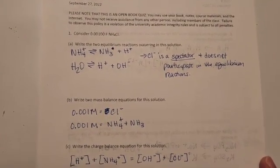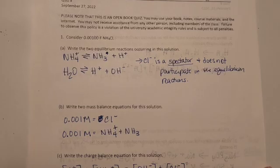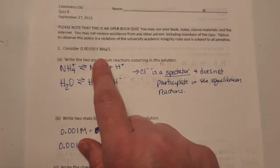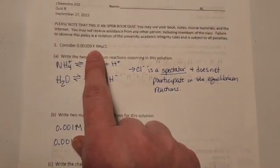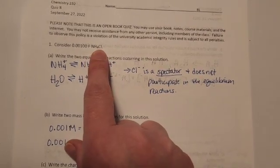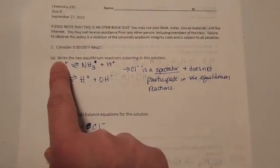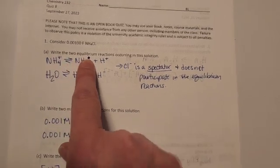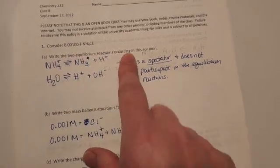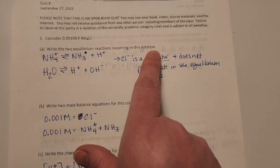I did want to talk about this problem. This was one that I saw on a couple of his practice quizzes. Okay, so we are looking at 0.001 formal of ammonium chloride. Okay, and the first part of the problem is, write the two equilibrium reactions that are occurring in this solution.